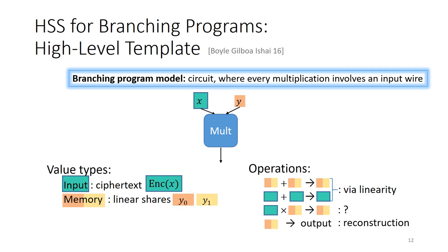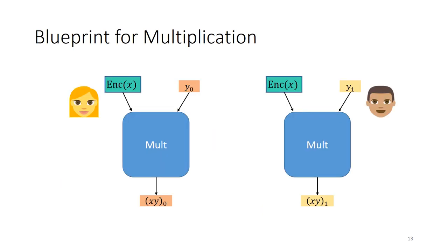The types of operations we'll support are: firstly, addition, where we can add either two memory values or two input values — this is a simple local operation by linearity of the secret sharing scheme or the homomorphism of the encryption scheme. Secondly, multiplication, which because of the restricted model is only between an input wire and a memory wire — this is the most complex part where the magic happens. Finally, any memory value can be reconstructed, which is just revealing the shares.